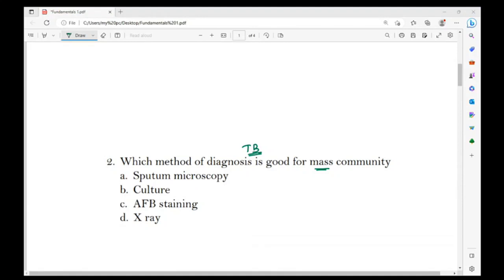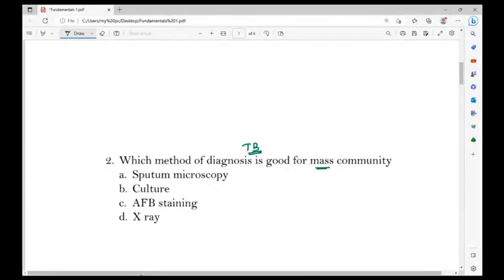The answer is option C, AFB staining. Acid-fast basil staining is good for the mass community examination. That is Ziehl-Nielsen staining. The AFB staining method is used.